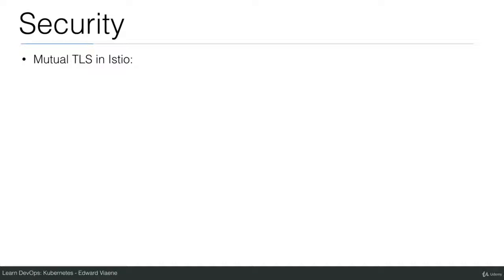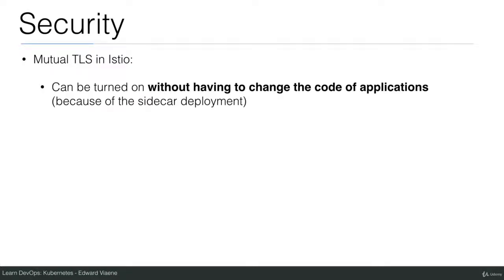Mutual TLS in Istio can be turned on without having to change the code of applications, because of the sidecar deployment. Once you enable mutual TLS, the sidecars will have TLS enabled between them. Your traffic will be encrypted and mutual TLS authentication will be enabled. If you don't have a certificate, then you cannot reach the service anymore. And it's only Istio that can issue the certificates.